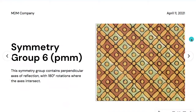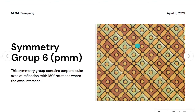Symmetry group six is named PMM. This symmetry group contains perpendicular axes of reflection with 180-degree rotations where the axes intersect — such as these lines here, they intersect within each other at one panel at a time.